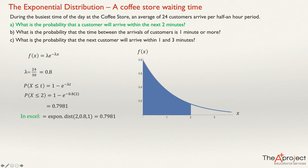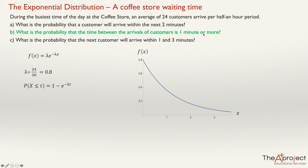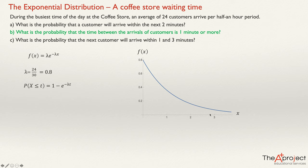Now let's find the answer to Question B: What is the probability that the time between the arrival of customers is one minute or more? We use the same formulas — the probability density function and the cumulative probability. The question asks for one minute or more, which is the area to the right of one minute on the graph — all values greater than one.